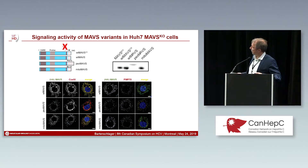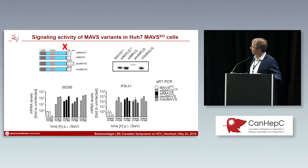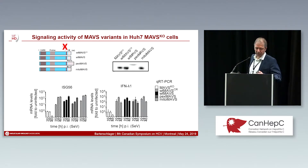We looked at the subcellular localization of these MAVS proteins — overall the localization was correct: PEX-MAVS at peroxisomes, Mito-MAVS at mitochondria, and wild-type MAVS at both sites. We then infected these cells with Sendai virus, a potent inducer of the interferon response. When cells do not express MAVS — the MAVS-KO cells — nothing happens; they are interferon-incompetent. But when you replenish with different versions of the MAVS gene, the interferon response comes back no matter where the MAVS protein localizes, whether at the peroxisome or mitochondria. The cleavage-resistant MAVS is also fully functional.